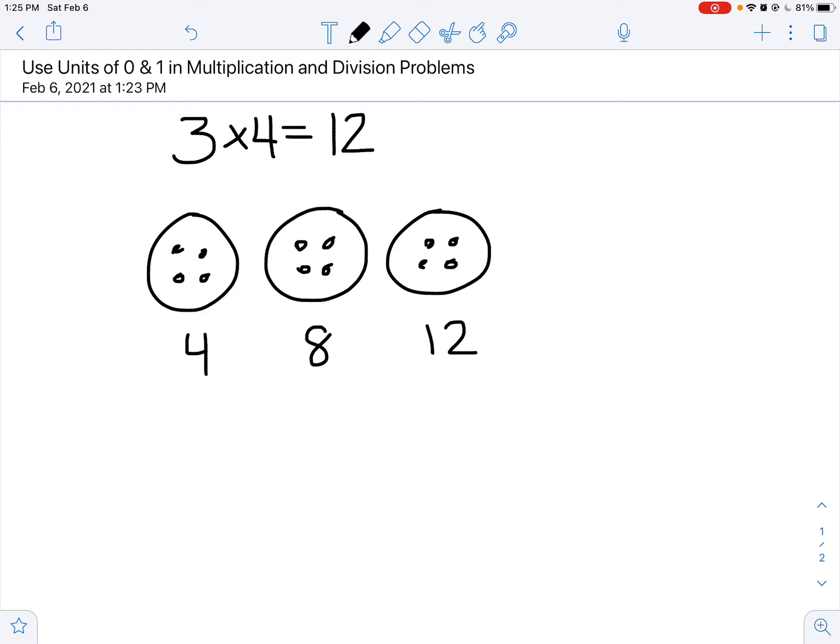What would happen if I get rid of one of my groups? Let's check. Let's say I get rid of this group. How does my multiplication sentence change? Think about it. And hopefully you said it would change to 2 times 4, because this time we have 2 groups of 4 with a product of 8.